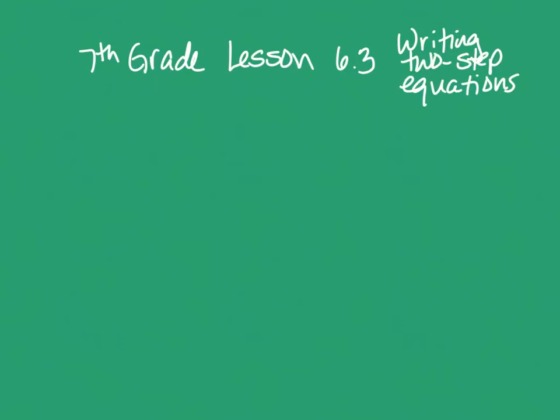Seventh grade lesson 6.3 is writing two-step equations. We don't even have to solve them in this section. They just want us to practice writing them, basically translating from English in word problem form to math ease in an equation form.